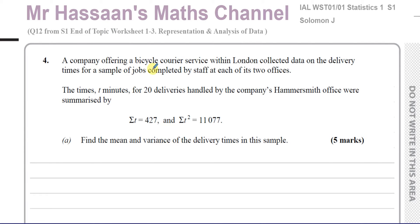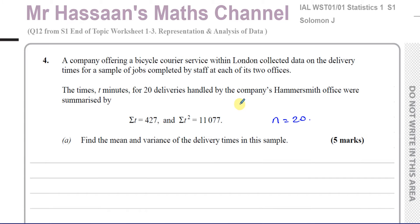It says: a company offering a bicycle courier service within London collected data on the delivery times for a sample of jobs completed by staff at each of its two offices. The times t minutes for 20 deliveries handled by the company's Hammersmith office were summarized by the sum of t equals 427 and the sum of t squared equals 11,077. Find the mean and variance of the delivery times in this sample. So this is the sum of all the times for those 20 deliveries — the number of entries is 20. That's the sum of all the times, and that's the sum of all the squares of the times: you take each time, square it, and add them together.